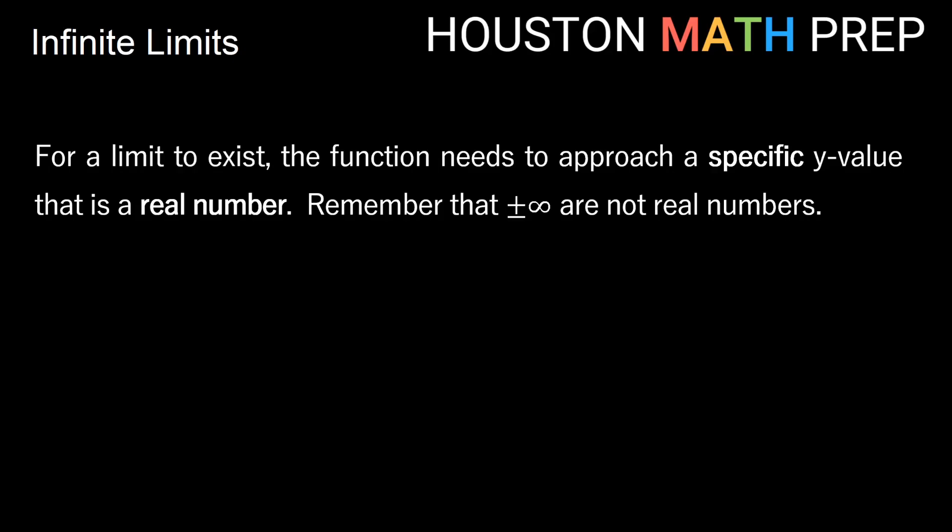Hey everyone, Houston Math Prep here. We are going to talk about what happens when we take limits and our function goes off to some sort of positive or negative infinite value on the graph. For a limit to exist, the function needs to approach a specific y-value, and that y-value needs to be a real number. When we say the limit exists, we should be able to say the limit is 4, or negative 10, or some real number.